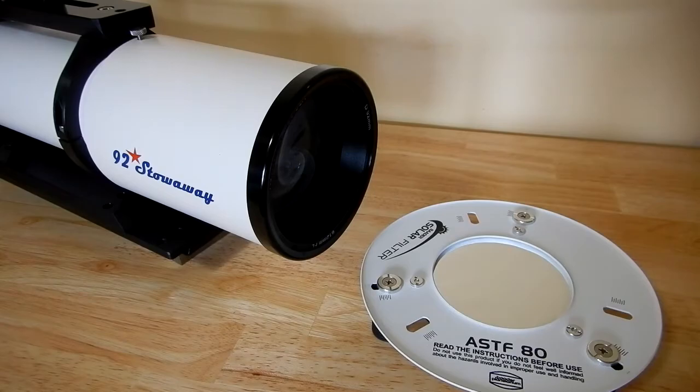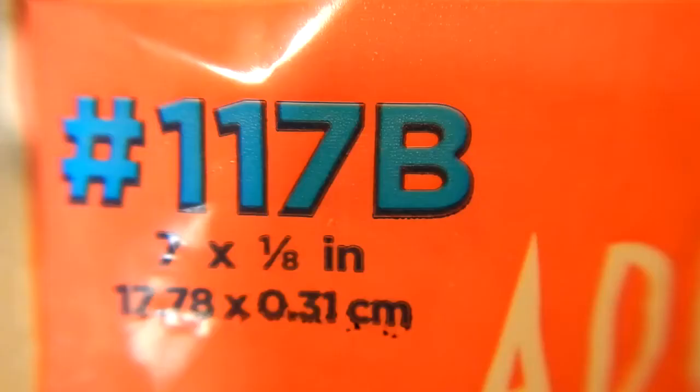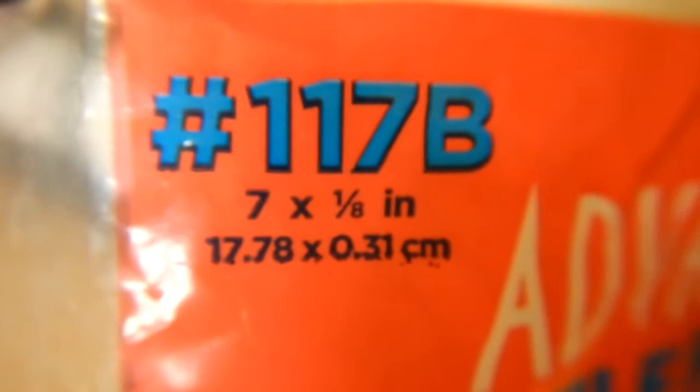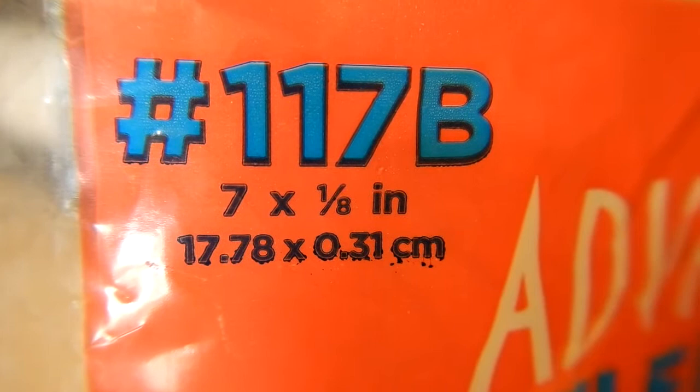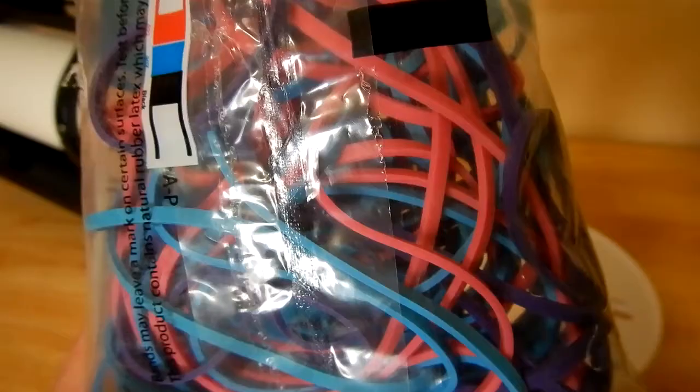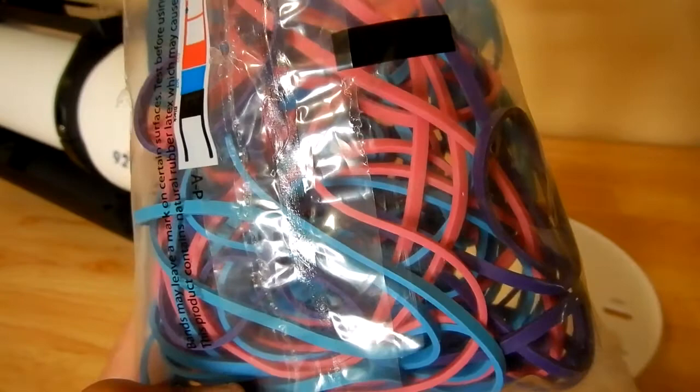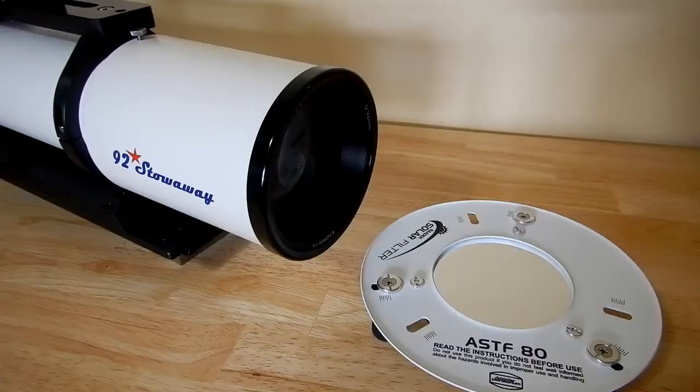Now what I'll be using are these rubber bands. I bought these at Walmart, a number 117B, seven by one-eighth inch. You get a quarter pound of these for less than three dollars, so they're very economical. And so here's what one of those are like.